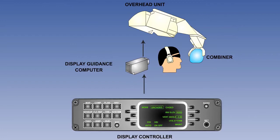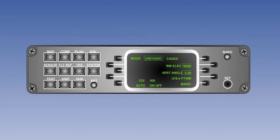The components of the system vary depending on its age, but the initial versions designed for civil aircraft comprise a display controller, a display guidance computer, an overhead unit, and a combiner. The main purpose of the display controller is to allow the pilot to select the various modes of operation available.